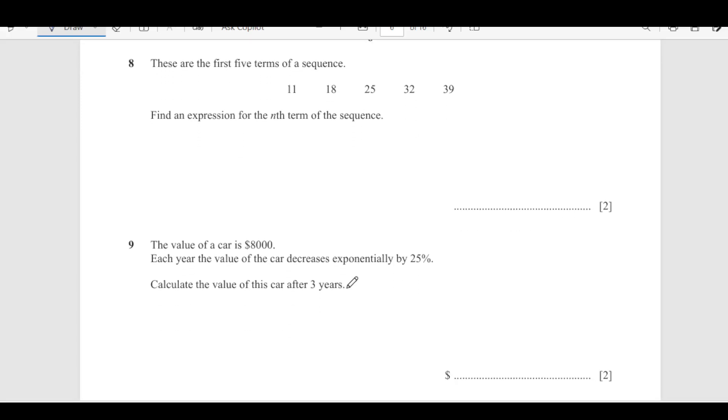Now, number 8, there are first 5 terms in the sequence. Find an expression for the nth term. These are the 5 terms. As you can see from first term, we are getting by adding 7 here. So, a is 11 and common difference is 7. So, we are looking for tn. tn is a plus n minus 1 into d. So, a is 11 n minus 1 into 7. So, this is 11 plus 7n minus 7. So, 7n plus 4 is the final answer.